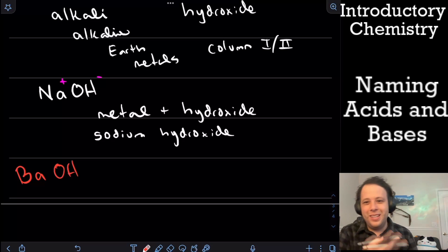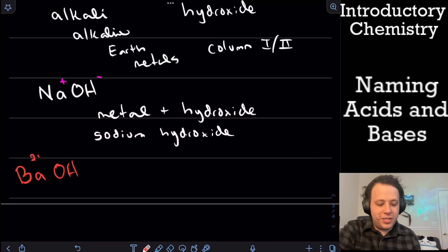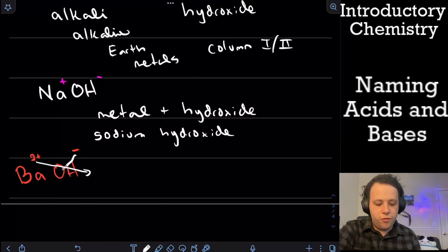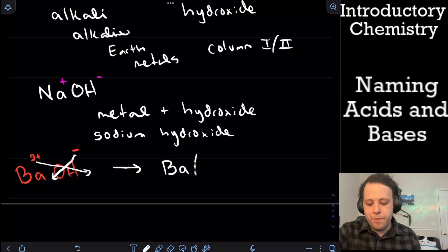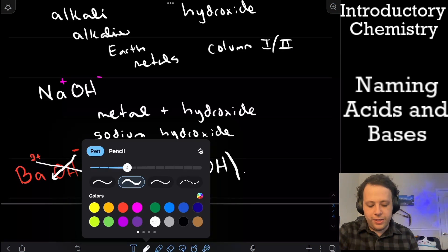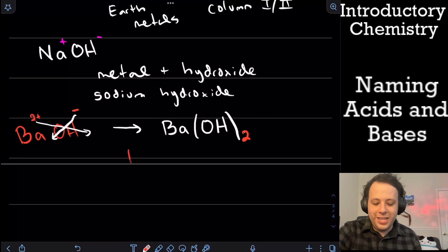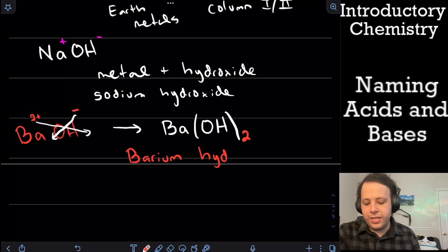Well, how do I name and balance it? Well, barium is a two plus charge. Hydroxide is a minus one charge. So we're going to swap, drop. Now keep in mind that two is going to be on the outside of parentheses. So this is going to become barium. And the OH is one polyatomic with the two outside of it. So when we name that, it's going to be barium hydroxide as the name.